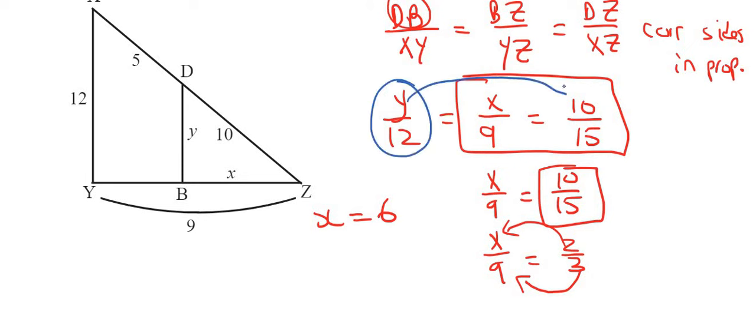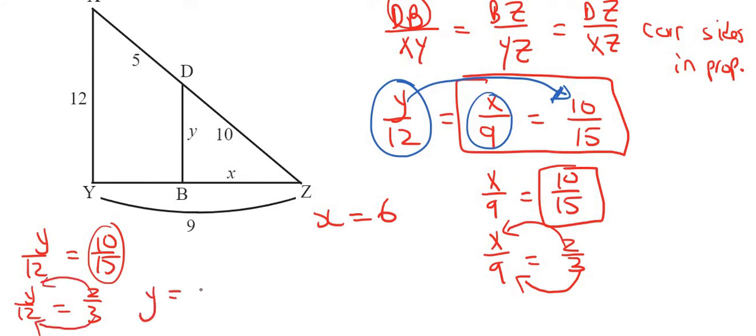I would then to find Y I would use this one and maybe this one over here. You could even use this one if you wanted to because we now have X, but I'm going to use Y over 12 equals to 10 over 15. I would simplify this and so that's Y over 12 equals to 2 over 3. I would then see the ratio here is times by 4, so I would times by 4, and so Y would be 8. And so there we have it, we've solved for X and we've solved for Y.